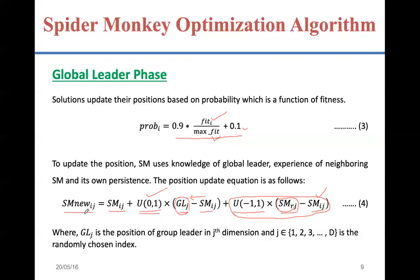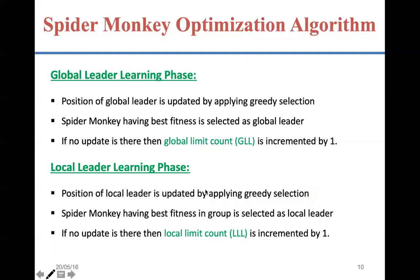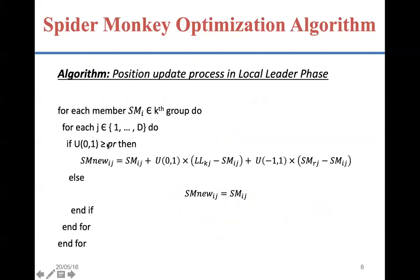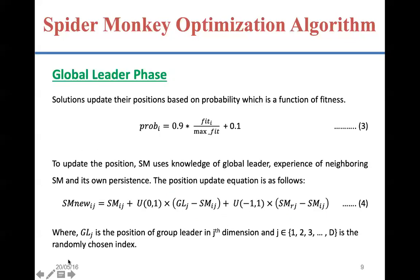In this phase, the solution is updated based on a randomly selected member of the entire swarm and the best member of the entire swarm, based on the given probability. The algorithm for this phase is the same as the previous one — the probability I_prob and the same algorithm will be used for this global leader phase also.